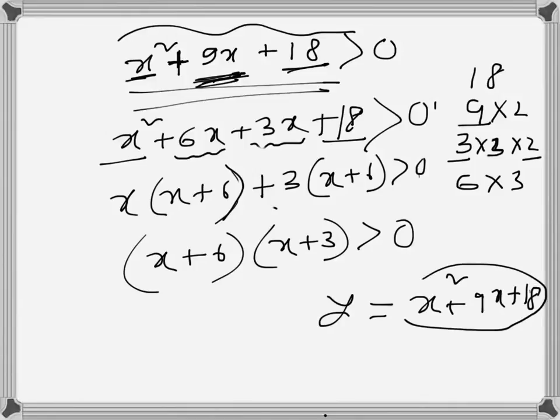So I have the roots, which is x = -6 and x = -3. That means this graph crosses the x-axis at point (-6, 0) and point (-3, 0).